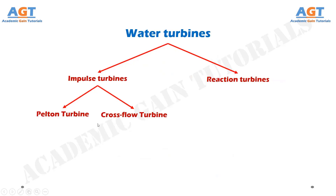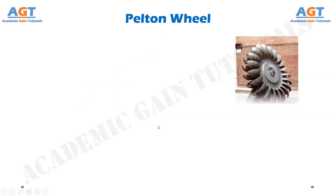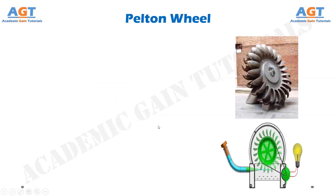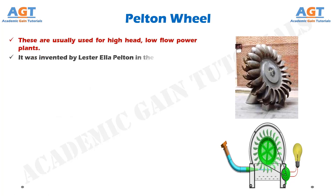The two types of impulse turbines are: Pelton turbine and cross flow turbine. The Pelton wheel turbines are usually used for high head, low flow power plants. It was invented by Lester L. Pelton in the 1870s.